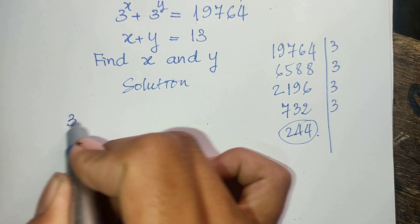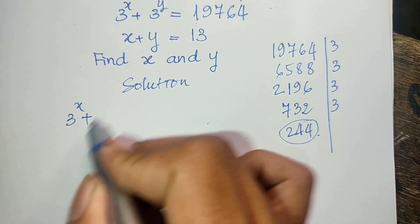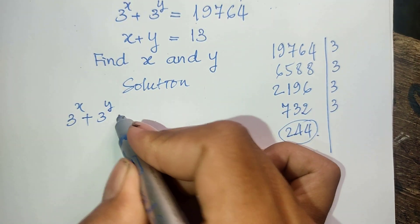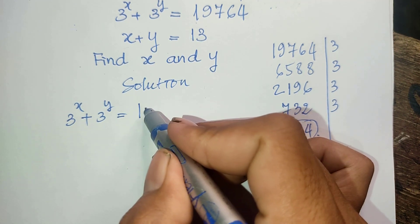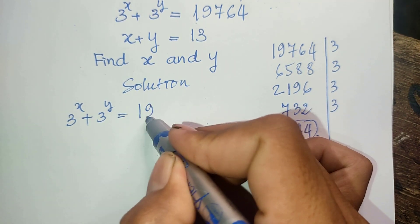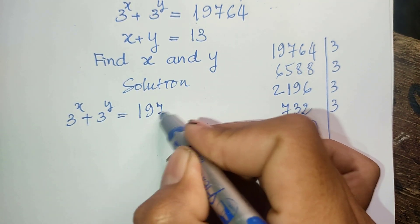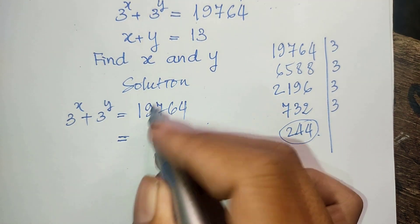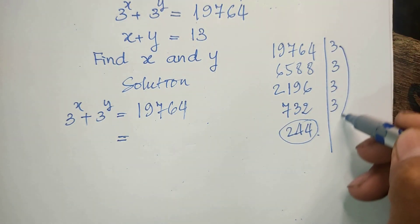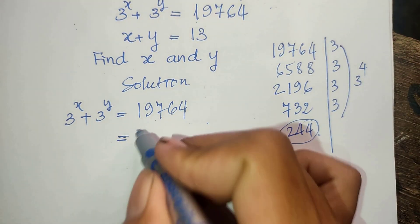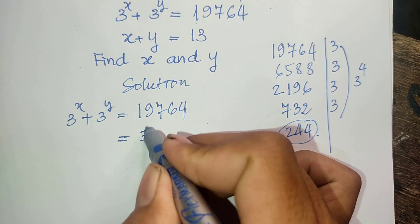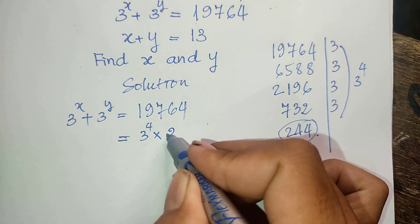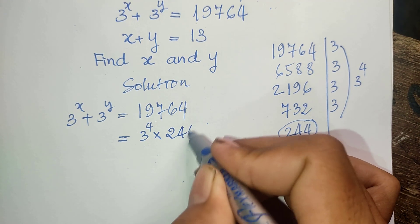So we can write 3 to the power h plus 3 to the power y equals 19764, which equals 3 to the power 4 multiplied by 244. We write it as 3 to the power 4 times 244.